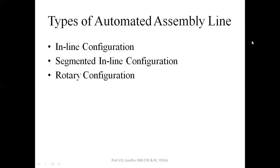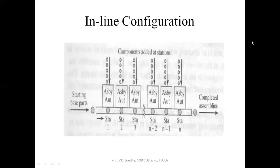There are three types of automated assembly lines: first, inline configuration; second, segmented inline configuration; and third, rotary configuration. We will now see each of these in detail.